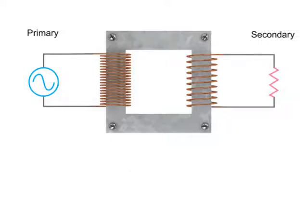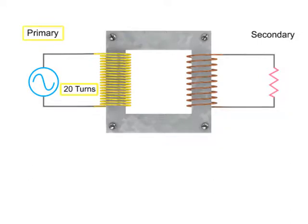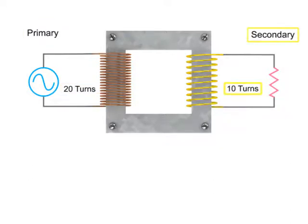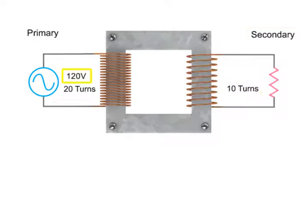In this example, we have 20 turns on the primary coil and 10 turns on the secondary coil. To determine the decrease in voltage occurring in this step down transformer,